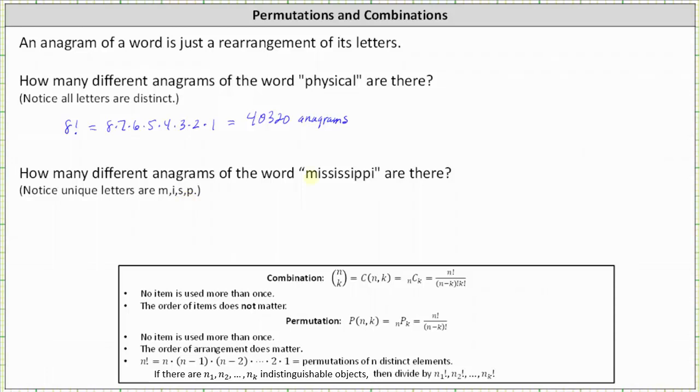Notice there's one m, but there are one, two, three, four i's, as well as four s's, and two p's. And therefore, the number of anagrams of the word Mississippi is not equal to 11 factorial because we have several indistinguishable letters.